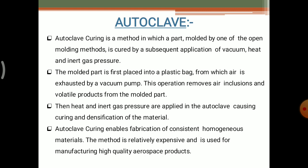The air is exhausted by a vacuum pump. This operation removes the air inclusions and volatile products from the molded part. The volatile products are also removed from the molded part. Then heat and inert gas pressure are applied in the autoclave, causing the curing and densification of the material.